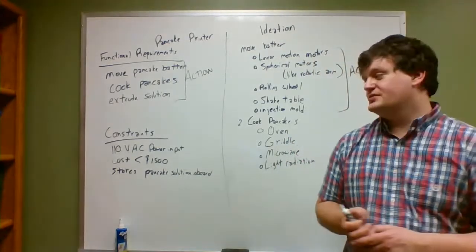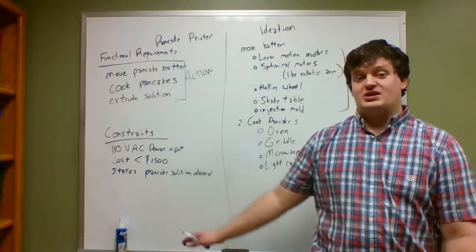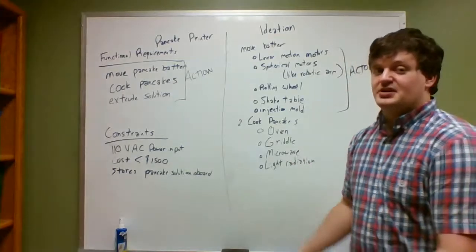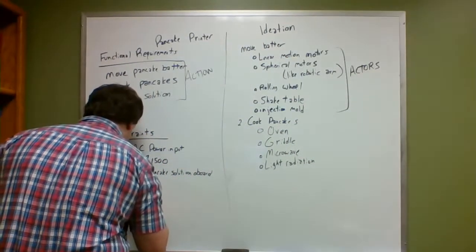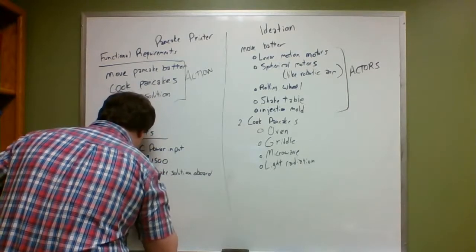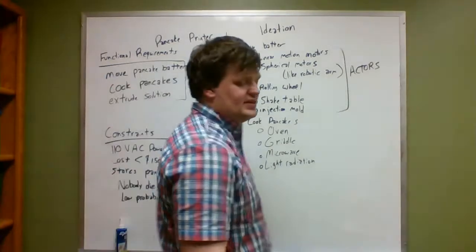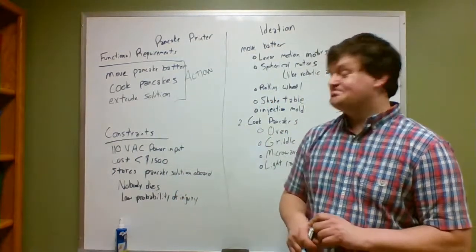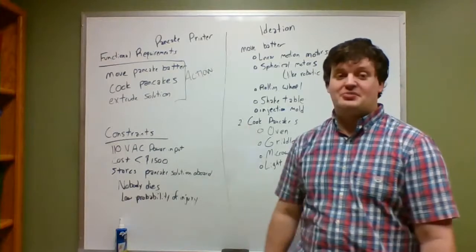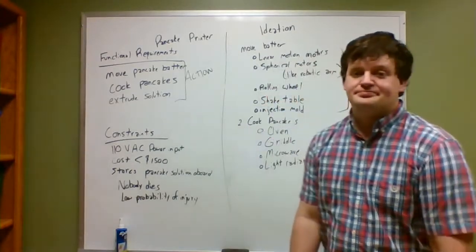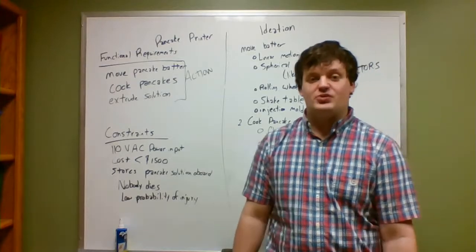We do have to consider ethics here — some of the unwritten constraints are: no killing people, the operator should survive using this, nobody dies, nobody gets hurt, no lawsuits. I didn't write those constraints on here but they're implicit — I should have written them. Also: reusable — you could probably come up with a pancake printer where you use it once and it self-destructs, but that's one solution that probably has a very limited market.